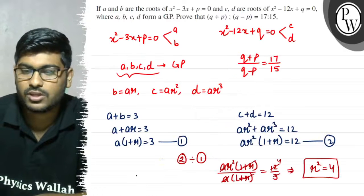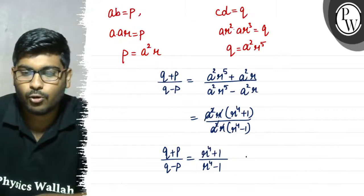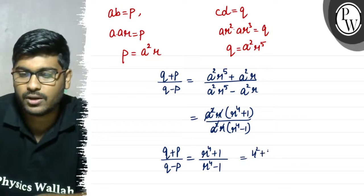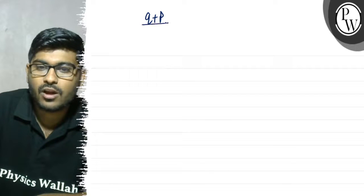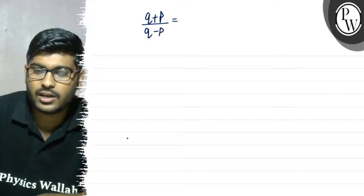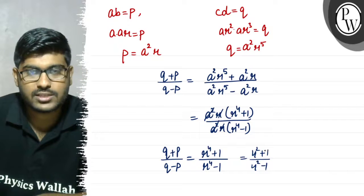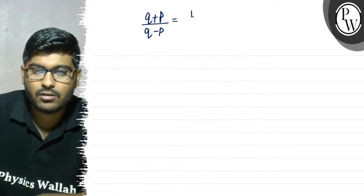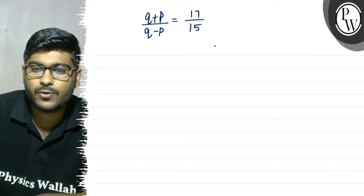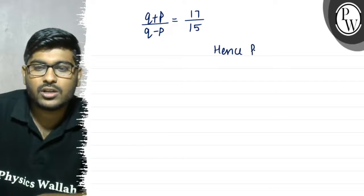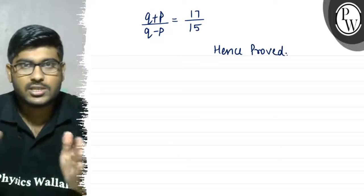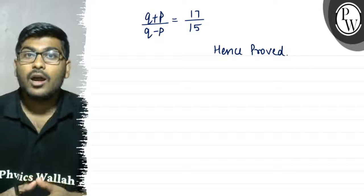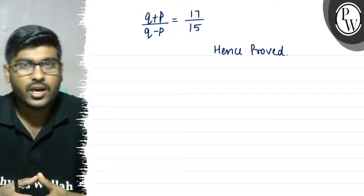Since r squared equals 4, r to the power 4 equals 16. So q plus p upon q minus p equals 16 plus 1 upon 16 minus 1, which is 17 upon 15. Hence proved. I hope you understood the explanation. Thank you.